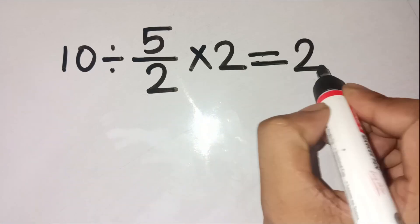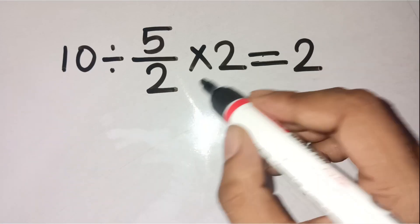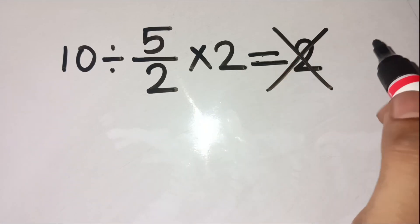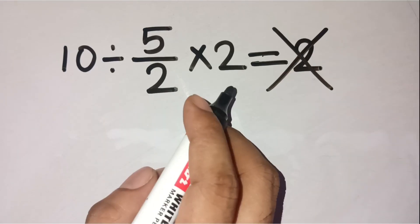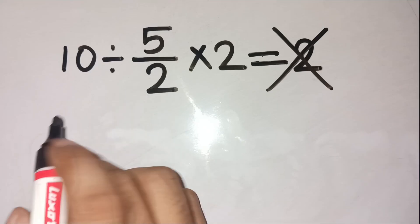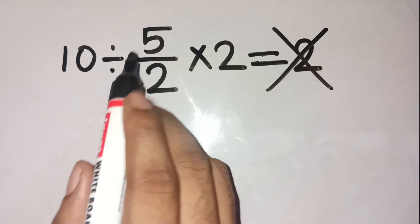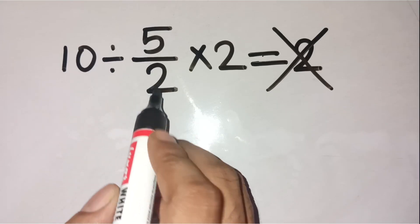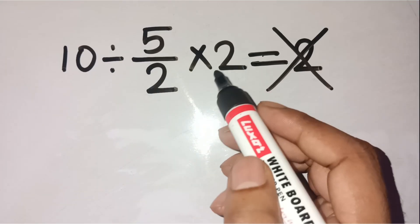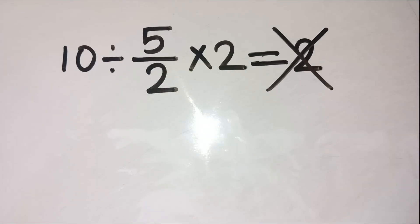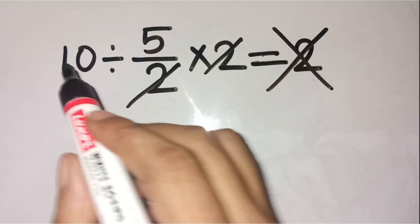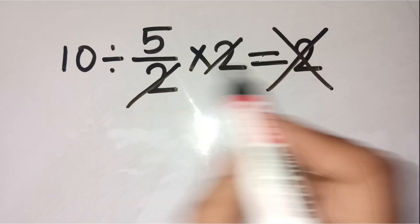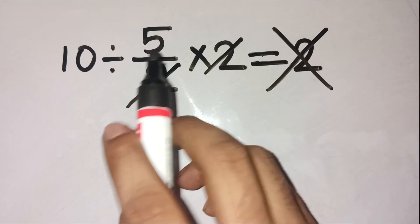If you think the answer is 2, you are absolutely wrong. I know, I know, it looks so simple, right? You see 10 divided by 5 over 2 times 2, and your brain just goes, the 2's cancel out and 10 divided by 5 is 2.